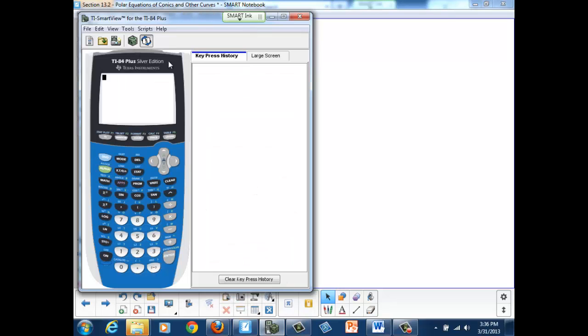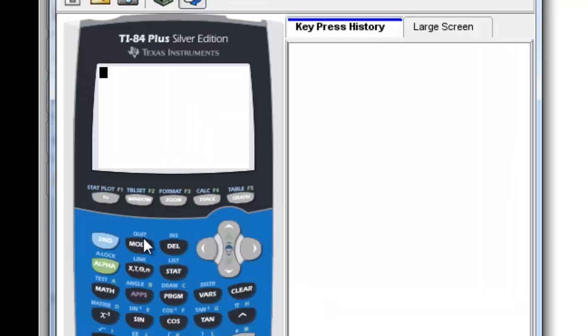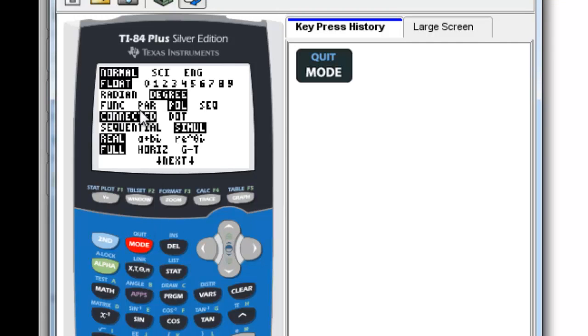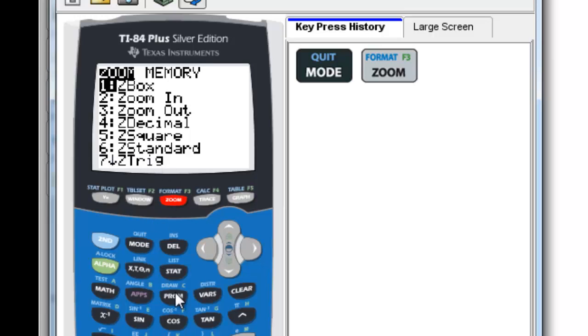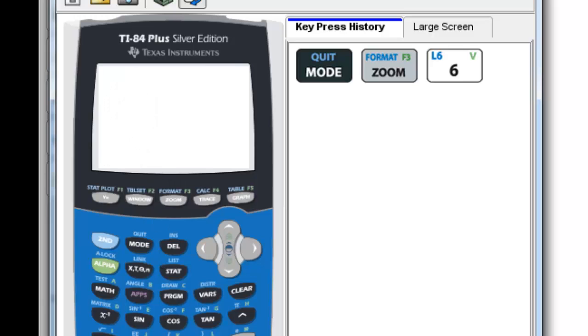We're going to go into our calculators and use a new mode. So if we go into mode, you'll see that down here on the fourth line, we're going to go into polar mode, P-O-L. And we want to make sure we're in degrees. Now, the next thing we're going to do is set our window and change the format. So first, let's just do a standard zoom, standard, number 6. Okay, looks the same.